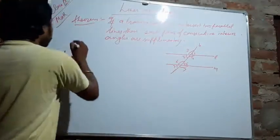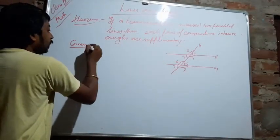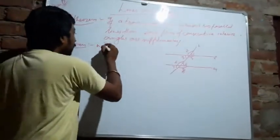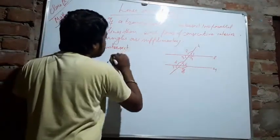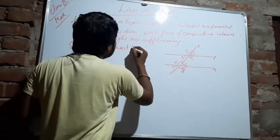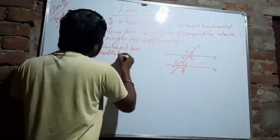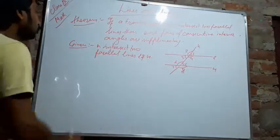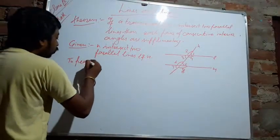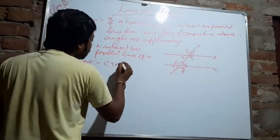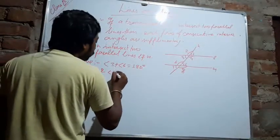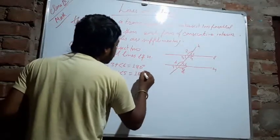Given: transversal intersects two parallel lines L and M. To prove: angle 3 plus angle 6 equals 180 degrees, and angle 4 plus angle 5 equals 180 degrees.